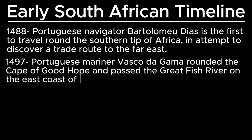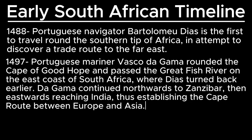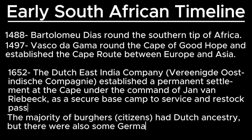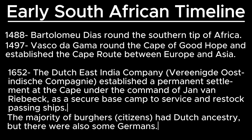In 1497 Vasco da Gama also rounded the Cape and went past the Cape of Good Hope past the Great Fish River where Bartolomeu Diaz earlier turned back, and then he sailed all the way north to Zanzibar and then east to India, establishing the Cape route between Europe and Asia. In 1652 Jan van Riebeeck established the Dutch Cape Colony for the United East India Company with free citizens.